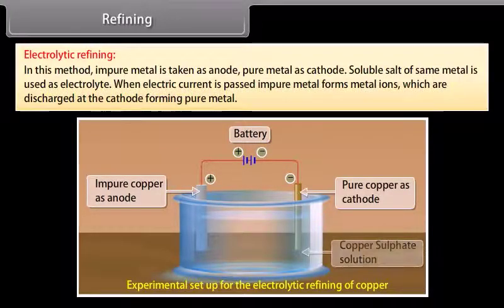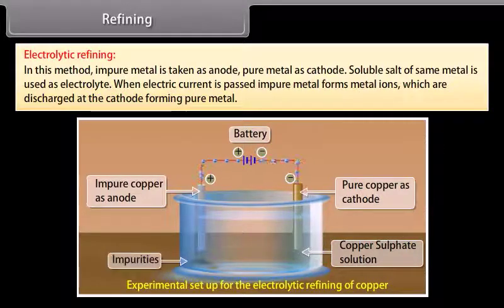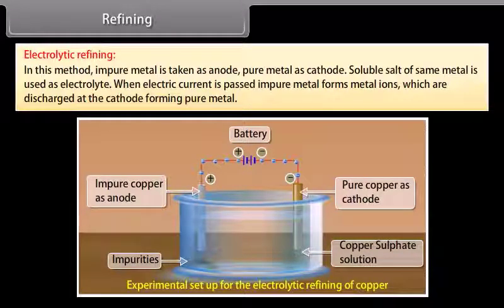Electrolytic refining. In this method, impure metal is taken as anode, pure metal as cathode. Soluble salt of same metal is used as electrolyte. When electric current is passed, impure metal forms metal ions which are discharged at the cathode forming pure metal. For example, copper, zinc and aluminium.